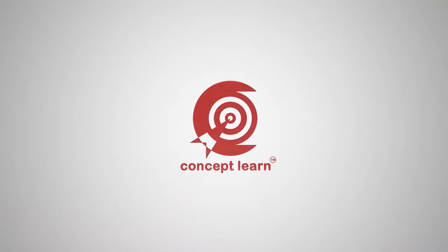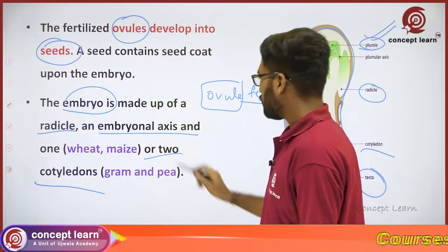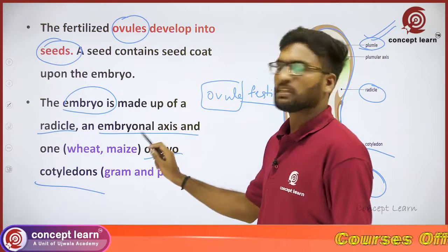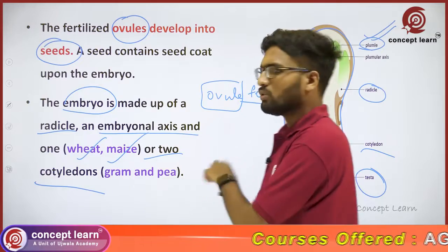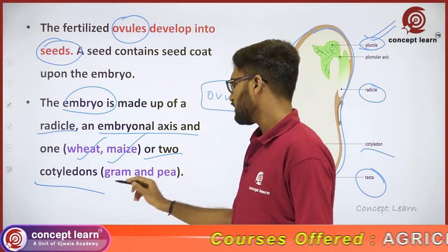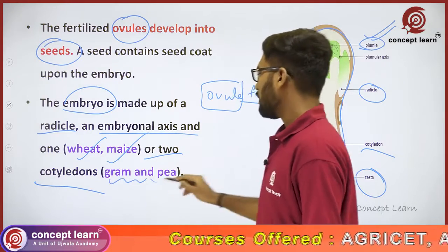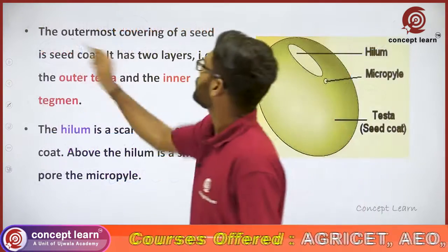Welcome to Concept Learn. One cotyledon is present in wheat and maize. Two cotyledons are present in gram and pea.